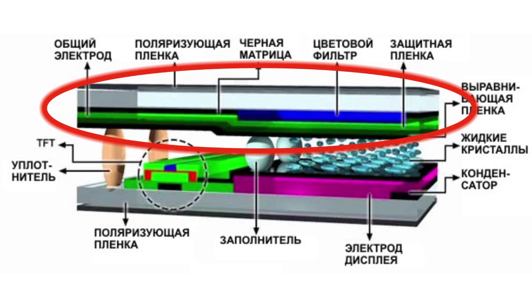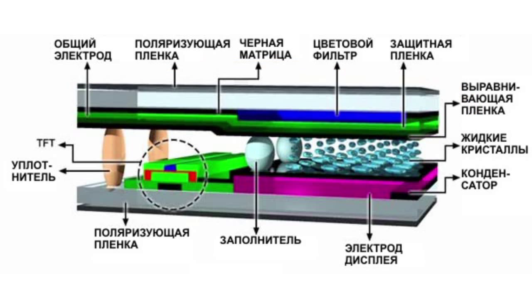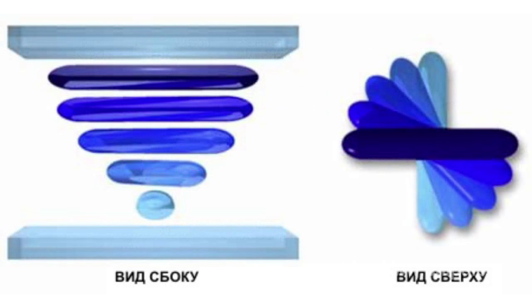The upper polarizer can polarize the scattered light from random polarization into a given direction of polarization. Before an electric field is applied to the electrodes, the liquid crystals are aligned in a twisted structure. The light in this case changes in accordance with the twisted picture of liquid crystals. The lower polarizer is directed perpendicular to the upper polarizer. When the light reaches the lower polarizer, both polarizers become aligned with each other.